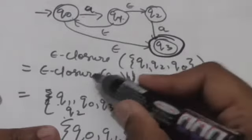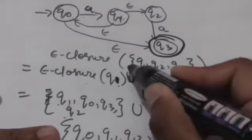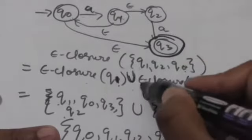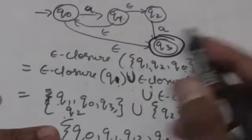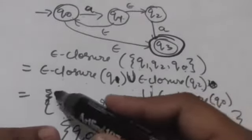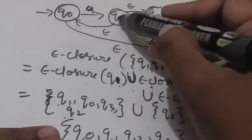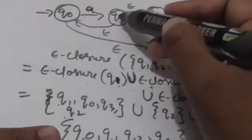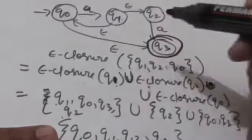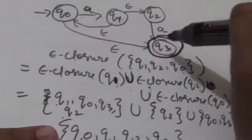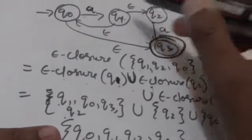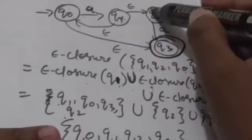First we will find ε-closure(q1), then ε-closure(q2), then ε-closure(q0), and then take the union of all of them. ε-closure(q1) will be a set having four states. It contains q1, and since there is an empty transition to q0, q0 is also in ε-closure(q1). From q0 there is an empty transition to q3, and from q1 there is also an empty transition to q2.